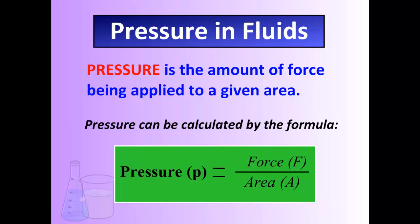Pressure is defined as the amount of force being applied to a given area. We calculate pressure by using the following formula: pressure is equal to force divided by area. Pressure is represented by the letter P, force by the letter F, and area by the letter A.